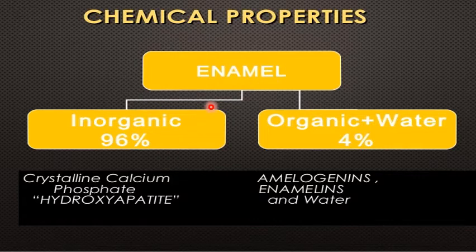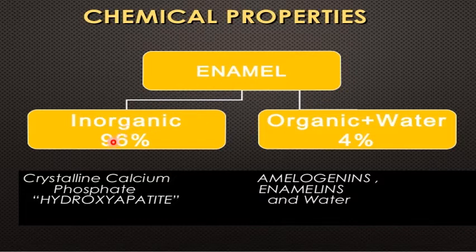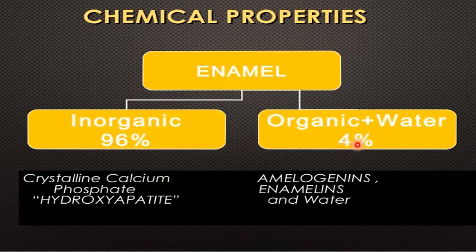The chemical composition of enamel is composed of organic material, inorganic material, and water. In mature enamel, the inorganic structure is about 96% hydroxyapatite crystals, while the remaining 4% is organic material and water — the proteins being amelogenin and non-amelogenin — and water.